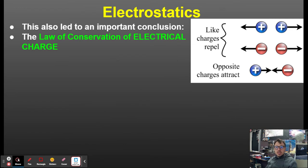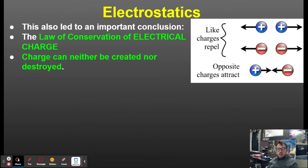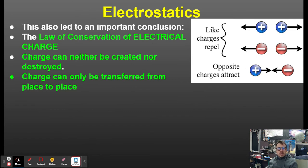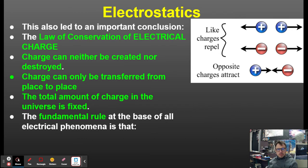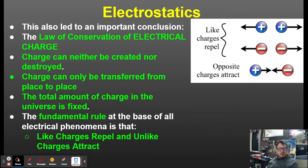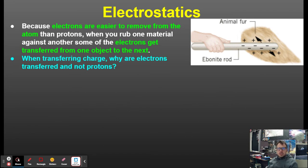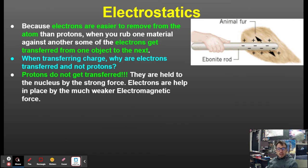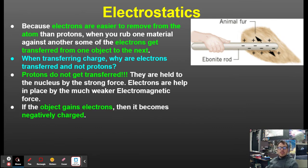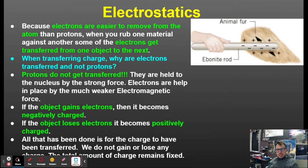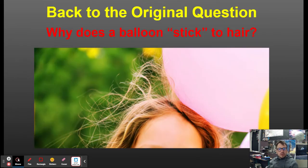This led to the law of conservation of electric charge: charge can neither be created nor destroyed; it can only be transferred from one place to another, and the total amount of charge in the universe is fixed. Like charges repel, unlike charges attract. Because electrons are easier to move than protons, when you rub materials together, electrons get transferred. If an object gains electrons it becomes negatively charged; if it loses electrons it becomes positively charged.